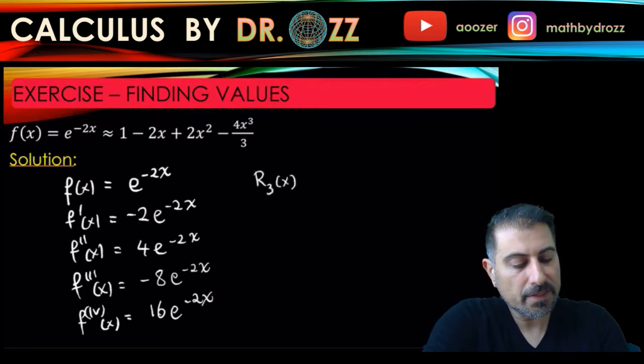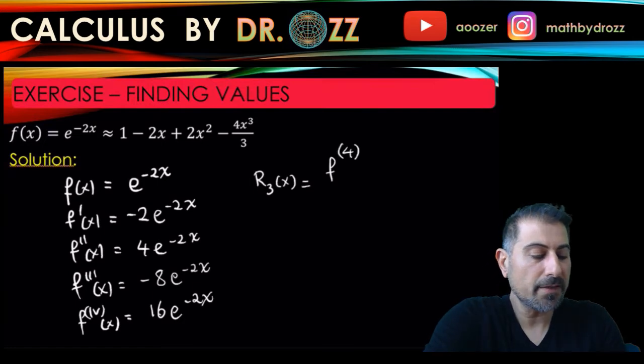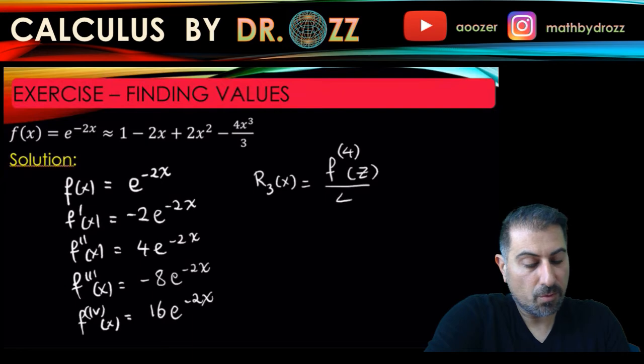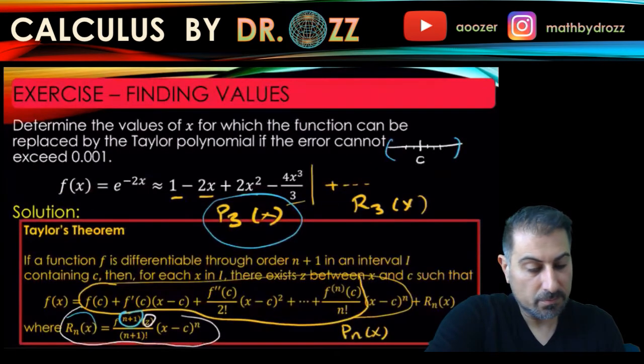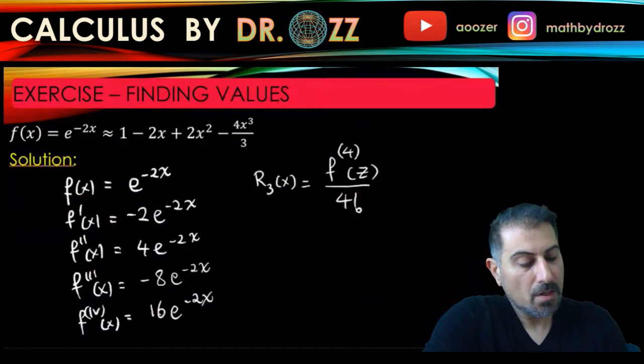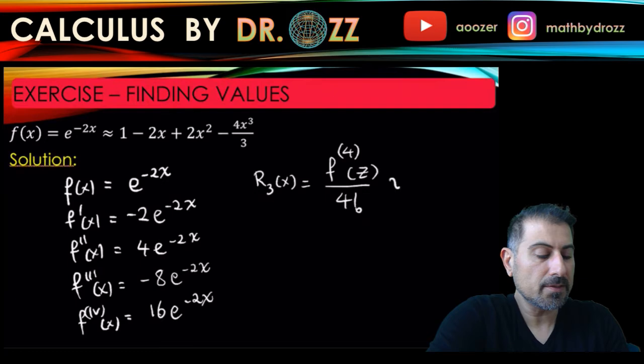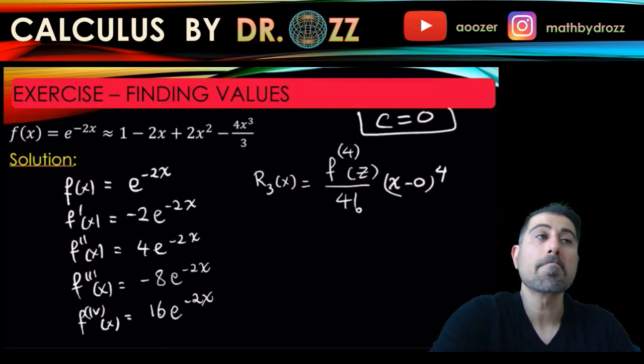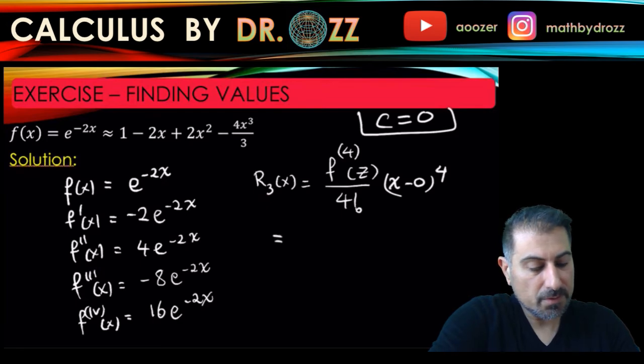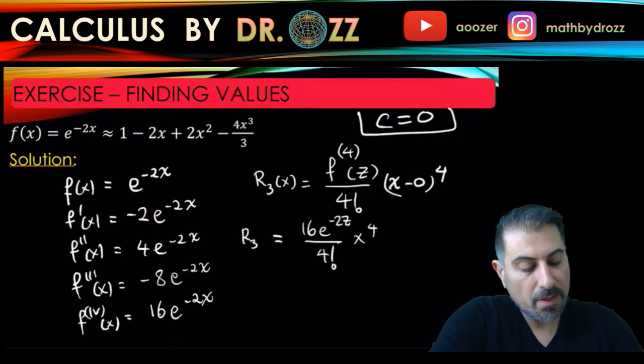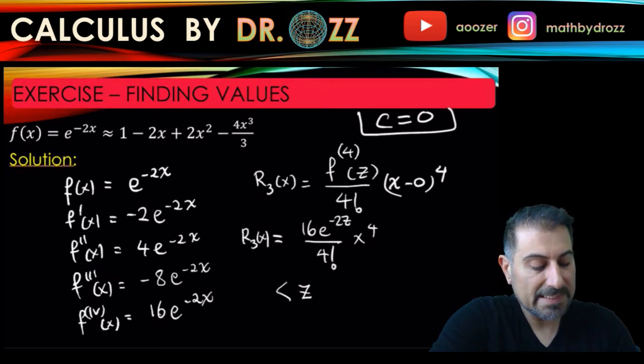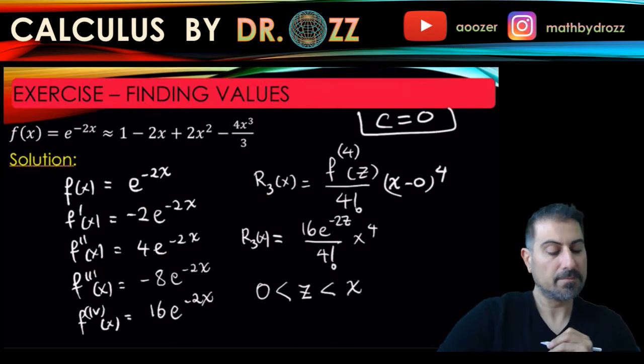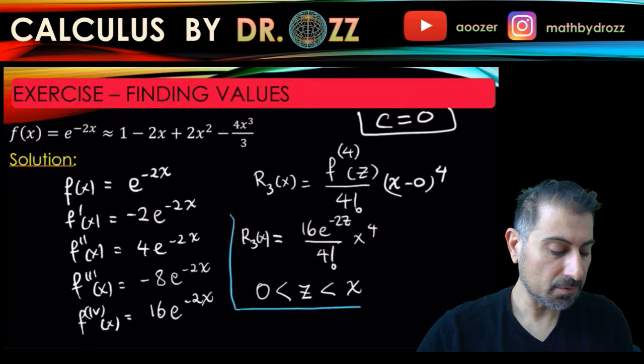All right, so let's write R3. R3 of x is equal to the fourth derivative of f evaluated at z, divided by 4 factorial. This is the Taylor expansion at 0, so that's going to be x minus 0 to the power of 4. So c in that regard is going to be taken to be 0 in this problem. And let's just rewrite this quantity. So this is 16 e to the minus 2z divided by 4 factorial x to the fourth. Well, one thing is that z is a number between c, which is 0, and x. So I'm going to make the analysis revolving around this.